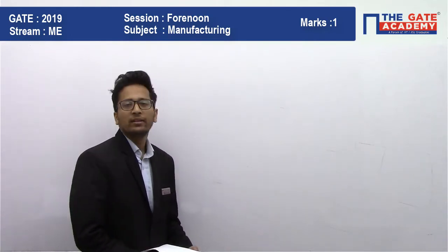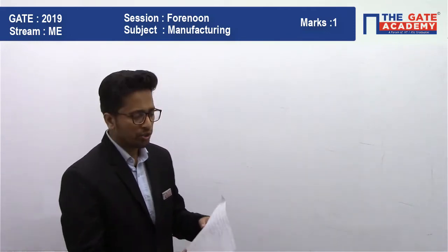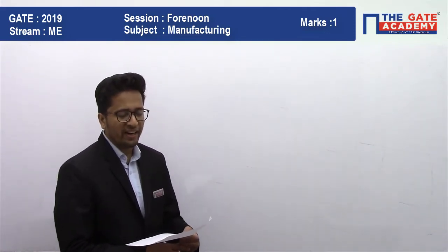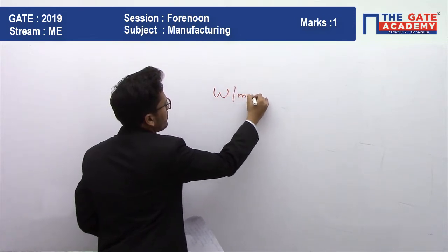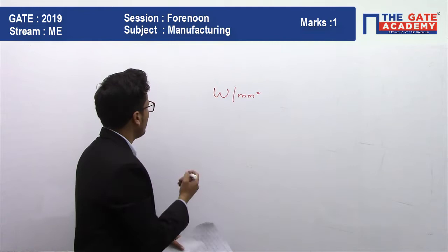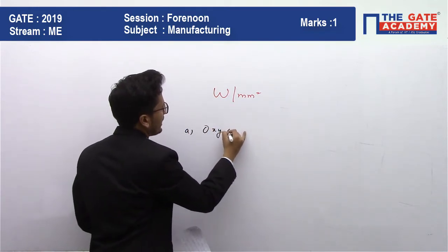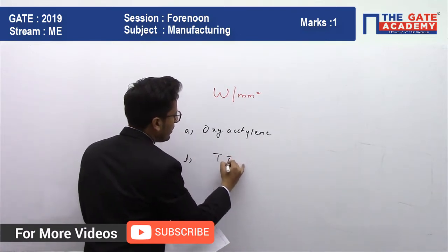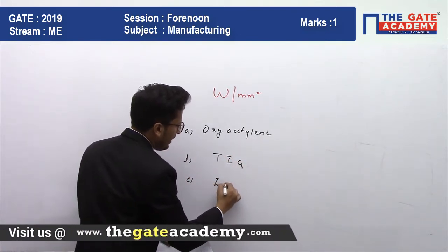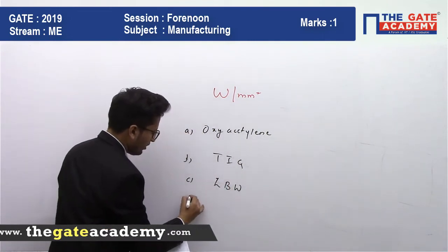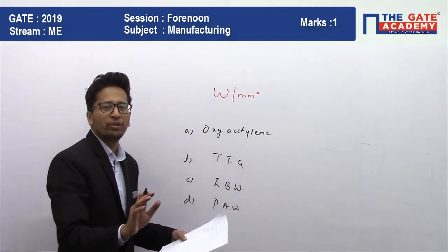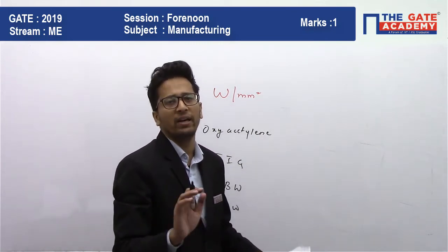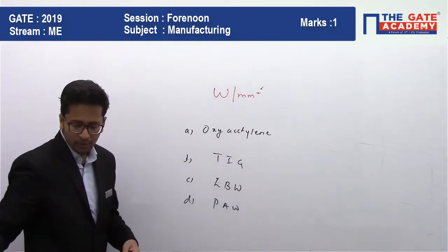Which one of the following welding methods provides the highest heat flux? Listen to the question very carefully. The unit is given as watt per mm squared. The options are: A — oxy-acetylene, B — TIG, C — laser beam welding, and D — plasma arc welding.